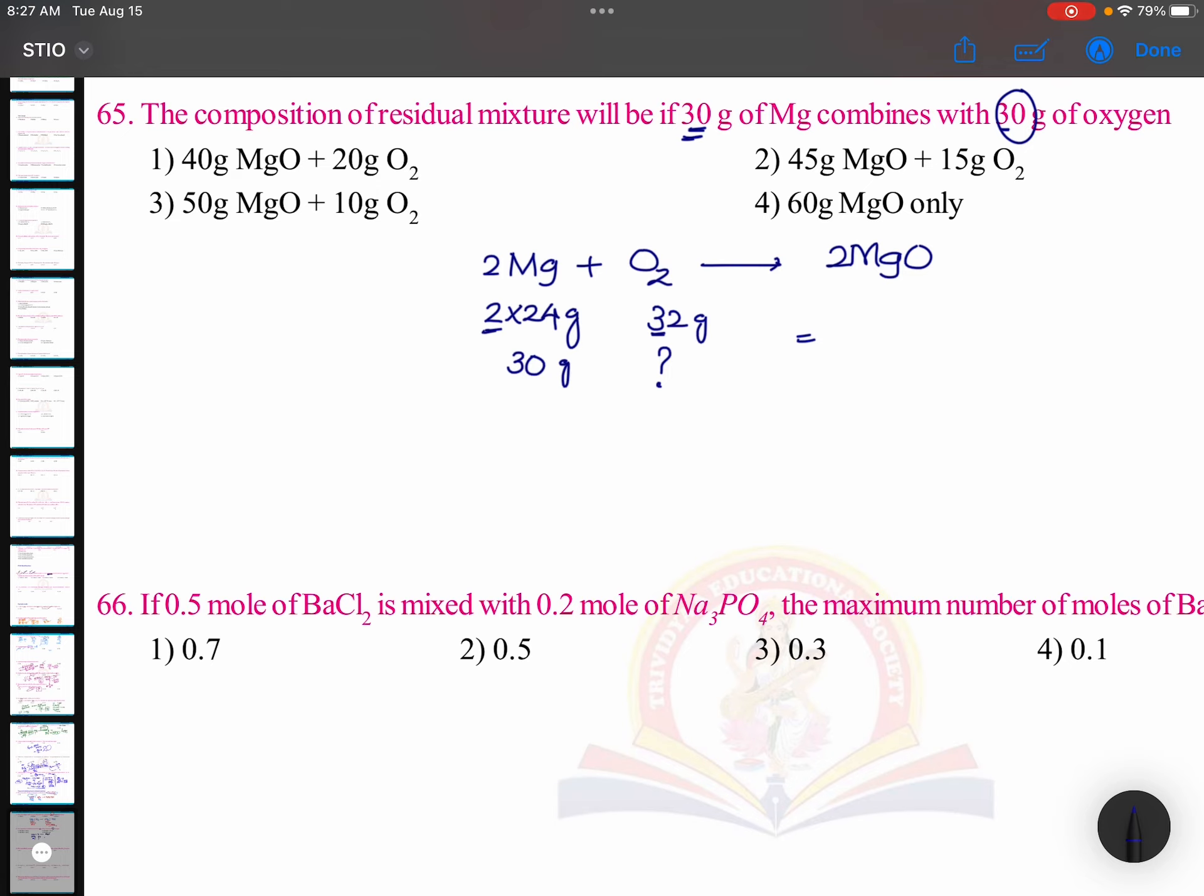The first one: 30 into 32 by 2 into 24. So you can say six fours, four six, four eights. So this is going to be 120 by 6 means 20 grams of oxygen is enough.